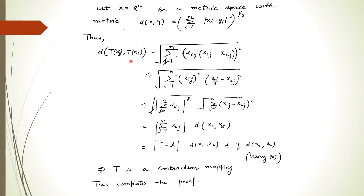We consider d(T(x1), T(x2)) and substitute the values of T(x1) and T(x2). This is less than or equal to ‖I - A‖ · d(x1, x2), where ‖I - A‖ is the determinant (norm) of (I - A). By the given condition, this is less than or equal to q, where q < 1, so the contraction condition is satisfied. Therefore T is a contraction mapping. Since the space is complete and the mapping is a contraction, there exists a unique fixed point of T, which completes the proof. In this way we can solve a system of linear equations using the Banach contraction principle.